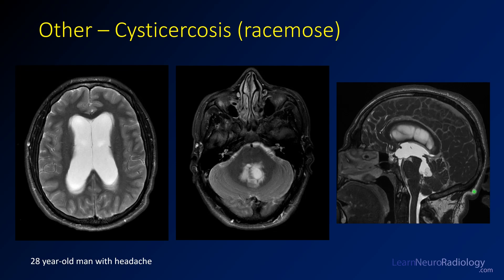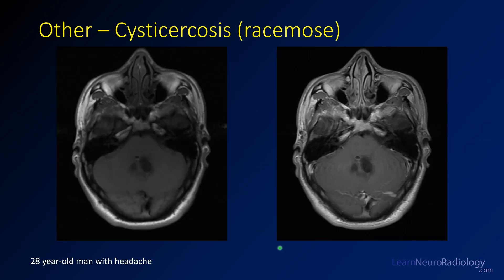Cysticercosis can also involve the ventricles and CSF spaces — when it does, it's called racimose, or grape-like, involvement. Here is a 28-year-old man with headache. On slices through the lateral ventricles, there's hydrocephalus with periventricular edema. Looking at the fourth ventricle, there's a multi-lobulated cystic lesion in its inferior aspects, seen better on a heavily T2-weighted thin-slice image along the inferior outflow tracts. Pre- and post-contrast images show very little, if any, enhancement — just cyst-like expansion of the fourth ventricle.